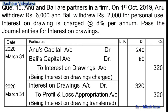Next question: Anu and Bali are partners in a firm. On 1st October 2019, Anu withdrew rupees 6000 and Bali withdrew rupees 2000 for personal use. Interest on drawings is charged at the rate of 8% per annum.